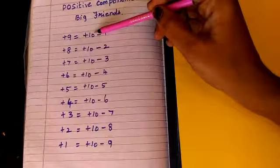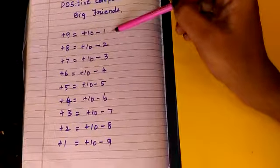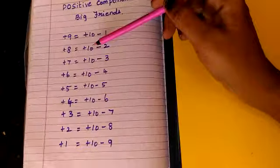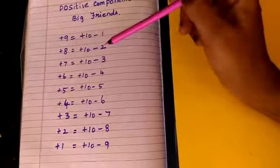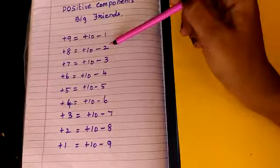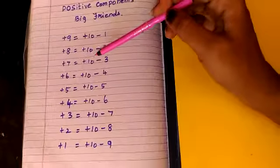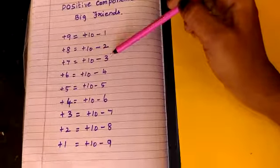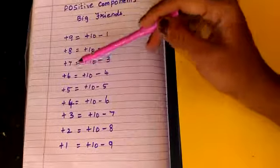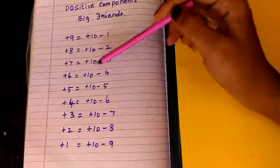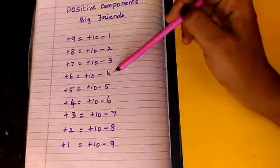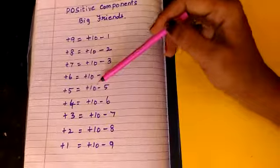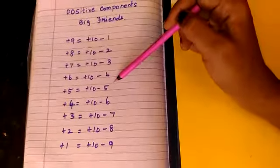Add 8: add 10 less 2. Add 7: add 10 less 3. Add 6: add 10 less 4. Add 5: add 10 less 5. Add 4: add 10 less 6.